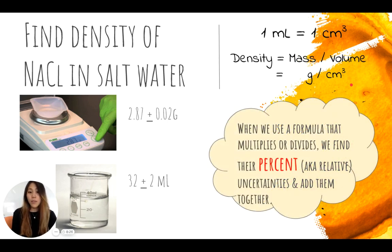When we use a formula that multiplies or divides, such as density, we find the percent uncertainties. This means we need to find the relative uncertainties first and add them together. So it's still addition and subtraction, but you just need to recognize that when you're using any form of multiplication or division in your formula, your uncertainties need to be relative uncertainties.